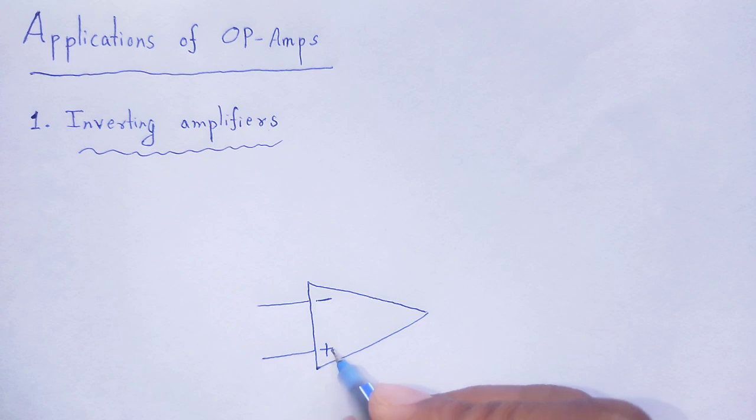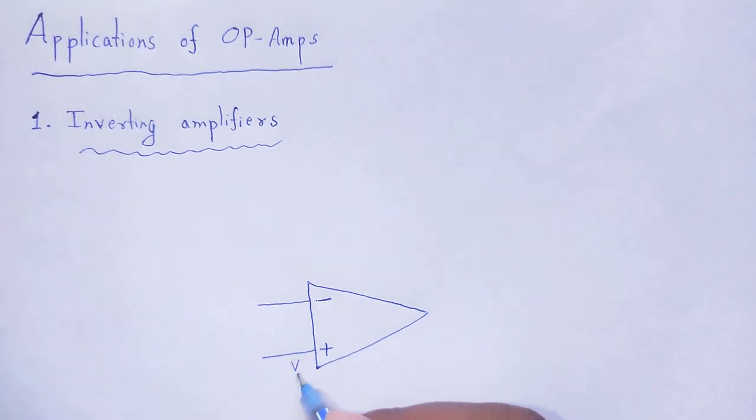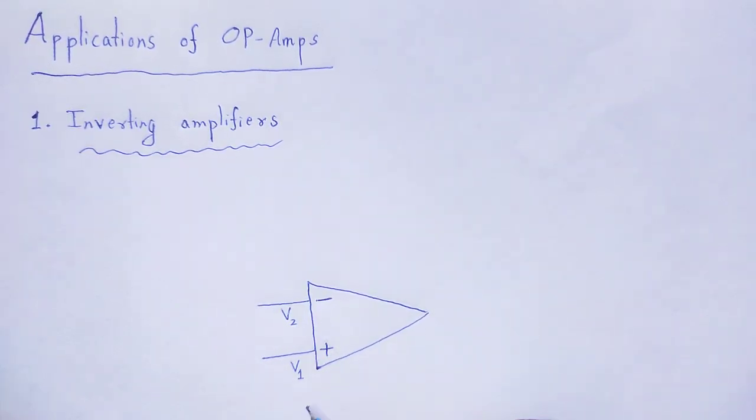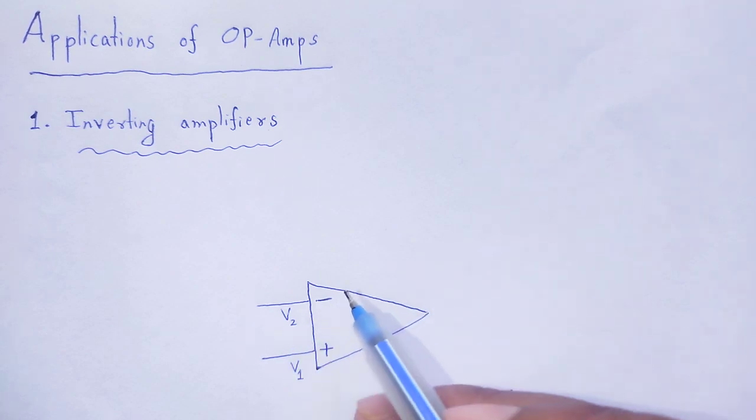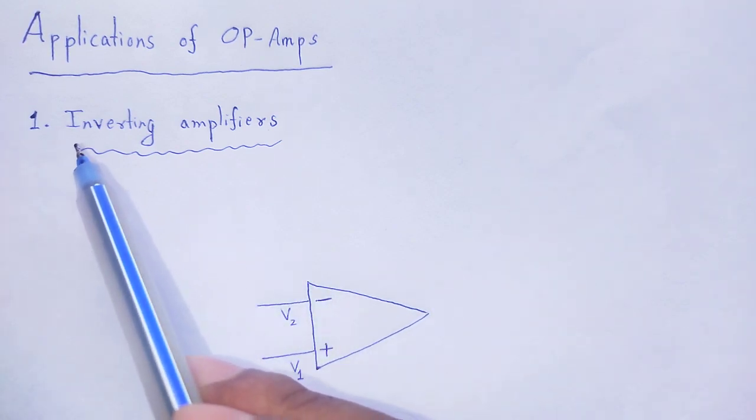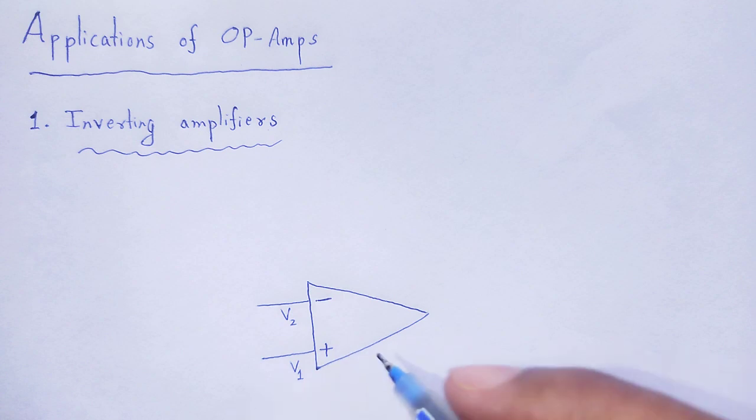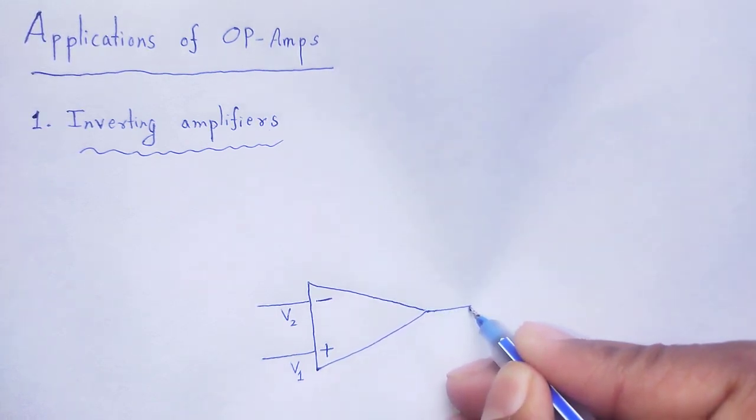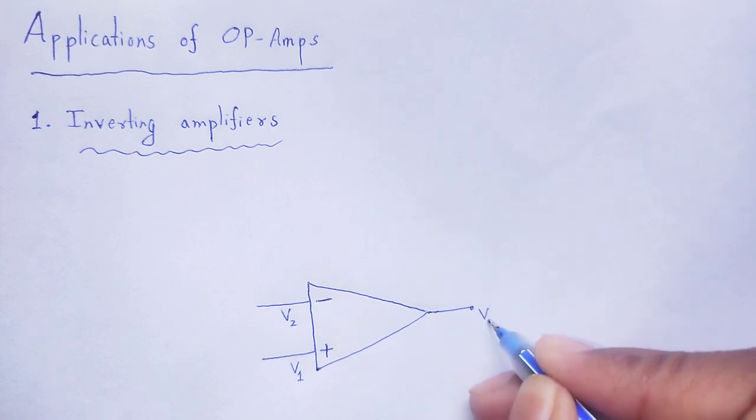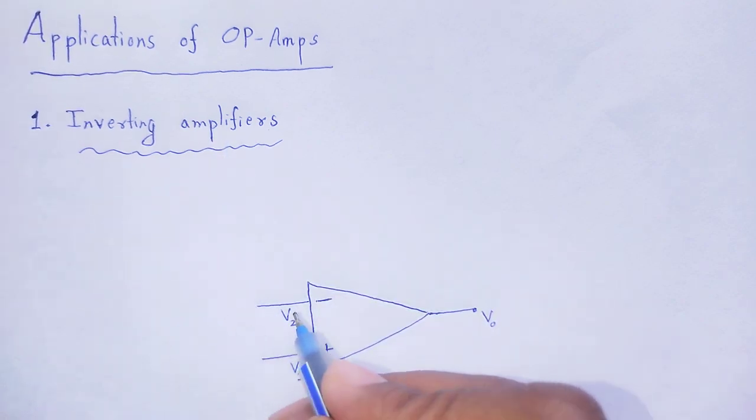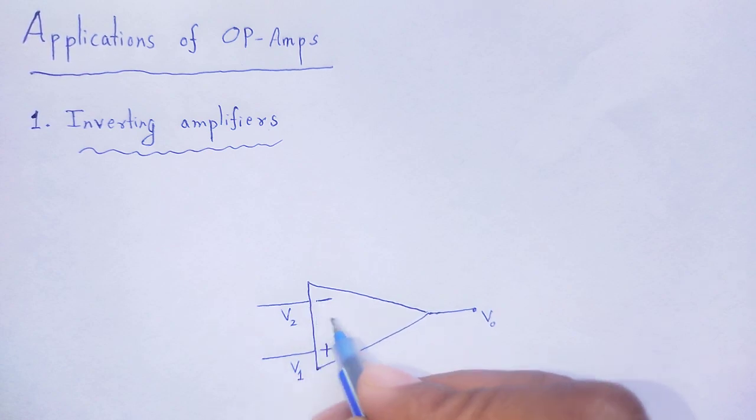Non-inverting terminal potential V1, inverting terminal potential V2. To create an inverting amplifier by using that op-amp, we obtain the output Vo. For inverting amplifiers, we provide signal to that of the inverting terminal of that op-amp.